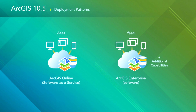Let's talk about ArcGIS 10.5 for a moment and two different deployment patterns. You've got ArcGIS Online, which is software-as-a-service — a cloud service where Esri handles the infrastructure and the service-level agreement, and you use it to deploy apps in your organization. And then there's ArcGIS Enterprise, which is installed in your infrastructure — that can be on-premises, in the cloud, or a combination. They support the same foundational capabilities, but ArcGIS 10.5 Enterprise allows you to expand and add additional capabilities not available on ArcGIS Online.